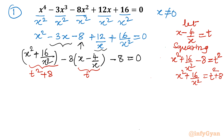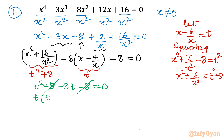Substituting, we get t squared plus 8 minus 3t minus 8 equals 0. The 8 and minus 8 cancel, leaving t squared minus 3t equals 0. Taking t common: t times (t minus 3) equals 0. That means either t equals 0 or t equals 3.